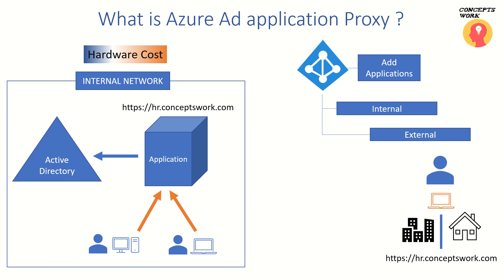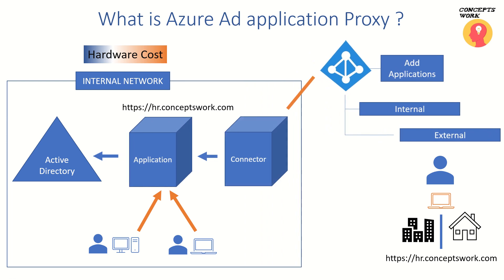Once you have added the application, you can download the agents, which are called connectors, and deploy them to any of your on-prem servers. What happens is that these agents deployed in your on-prem environment will make outbound requests to check if there is any pending request. This adds security because you are not opening any inbound ports — everything is outbound. Only two ports are used: port 80 and 443, and there are predefined endpoints. If you are very security-conscious, there is a list of endpoints for which you can allow ports 443 and 80 for outbound connectivity.